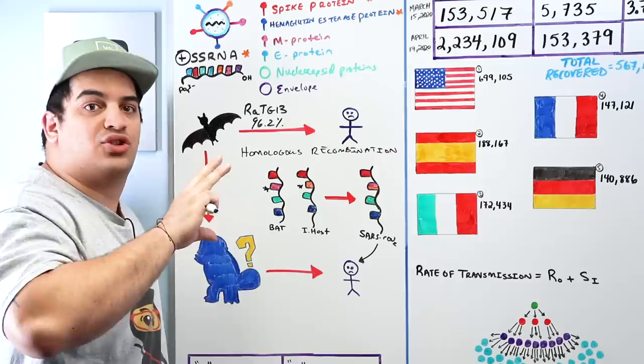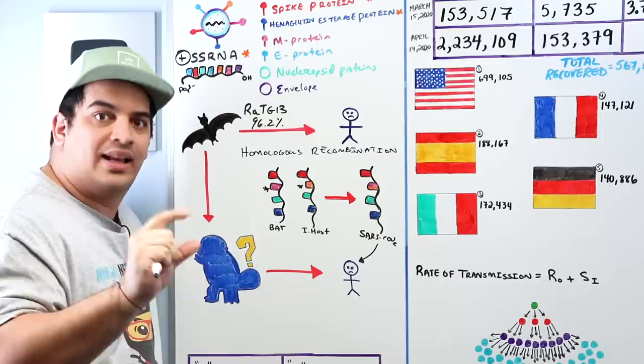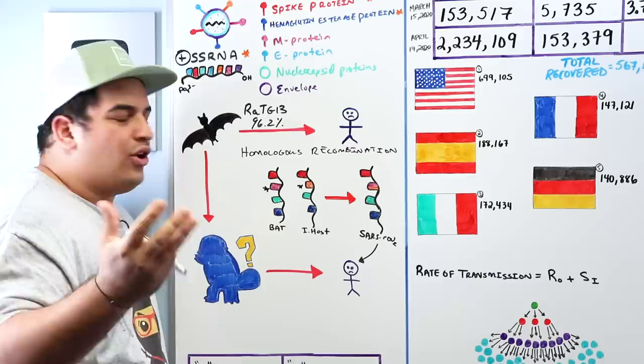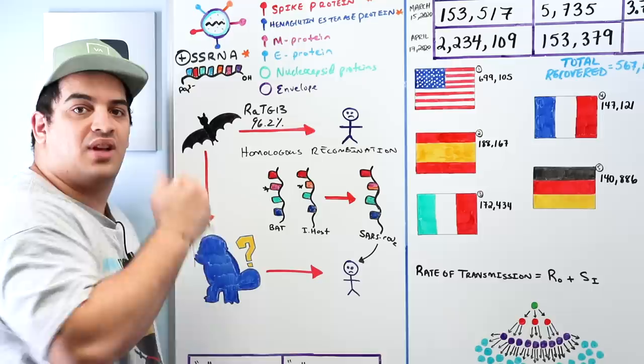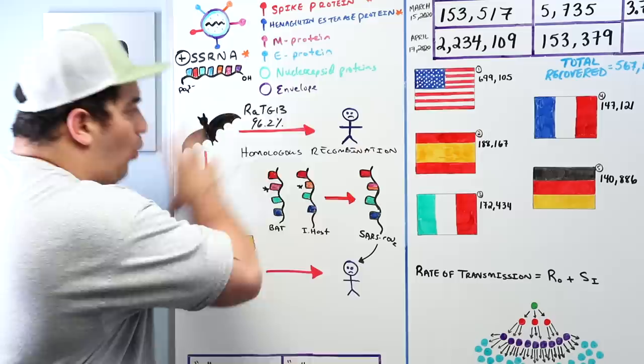There are also reports — though not yet confirmed in journal articles — suggesting the virus could potentially have been developed in a lab in Wuhan that was studying bats. This remains unconfirmed, but it represents another potential source currently under consideration.